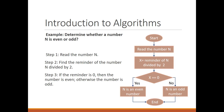The first rectangle says 'read the number n.' An arrow goes to the second rectangle which says 'set x equal to the remainder of n divided by 2.' Here we assign x the value of the remainder of n divided by 2. For example, if n is 15, then 15 divided by 2 has a remainder of 1, so x equals 1. Then we proceed to the next step, which is a diamond representing a decision.